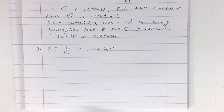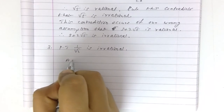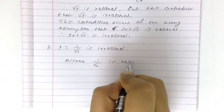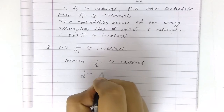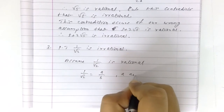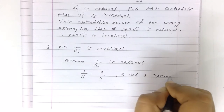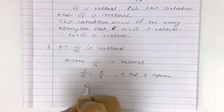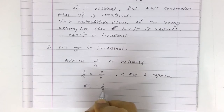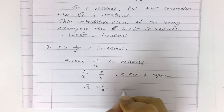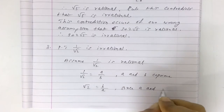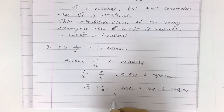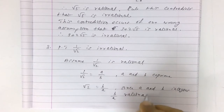Third question: prove that 1 by root 2 is irrational. Assume that 1 by root 2 is rational. Then 1 by root 2 equals A by B where A and B are co-prime — they have only 1 as their common factor. Since A and B are integers, B by A is also a rational number.